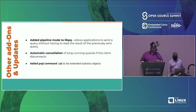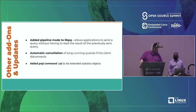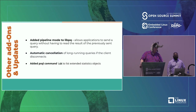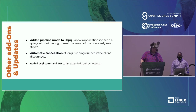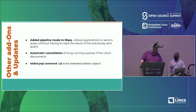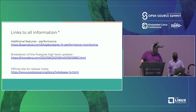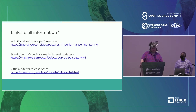Automatic cancellation of long-running queries when clients disconnect was also added. And they added a psql command \dx to look at extended statistics objects — I tried running this on Postgres 13 and it didn't work, so it's a new Postgres 14 feature. That's all the slides with links to where you can find all the Postgres 14 updates.